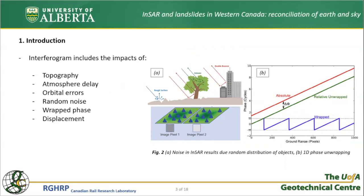Satellites do not capture SAR images repeatedly at exactly the same location, and these orbital variations impact the results. Moreover, random objects arbitrarily distributed on the ground corresponding to each pixel make our measurements noisy, and for these, appropriate spatial filters should be employed. Even if we can manage to deal with all these issues, the waves are wrapped in the range of minus pi to plus pi, and we need to unwrap them. In Figure 2b, we can see an example of a one-dimensional unwrapping process.